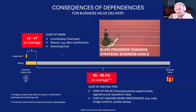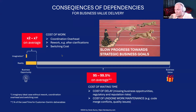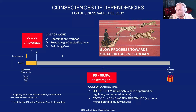A CEO of one of my clients described feeling like a man riding a snail compared to competitors running quickly — slow progress towards strategic business goals. Middle and top management often don't recognize this is not just a team problem; it crosses the entire organization and even organizational boundaries, ultimately impacting business results.